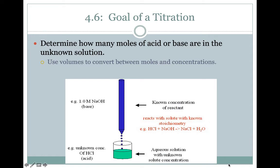Here's a schematic for what a titration looks like. This tube here is called a burette. The solution of known concentration, or the titrant, goes into the burette — in this case, we're using one molar NaOH, which is a base. The solution of unknown concentration goes in a beaker or flask below the burette. In this case that's HCl, an acid. The idea is that we will add titrant until we've completely neutralized all of the analyte, or the unknown solution. At that point, if we know how many moles of titrant we added, we'll know how many moles of unknown or analyte were there at the start.